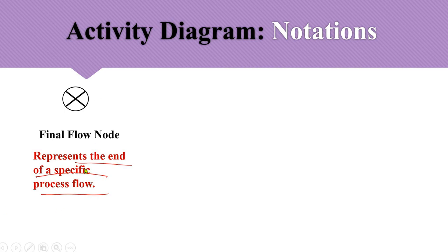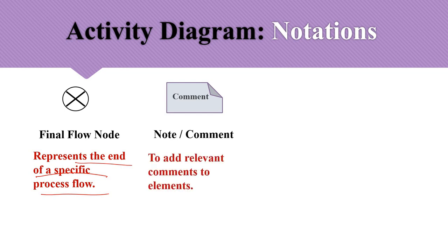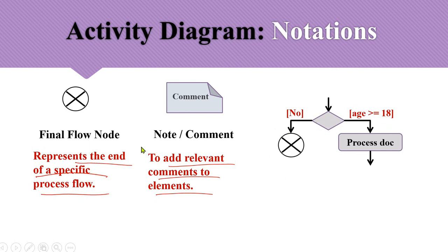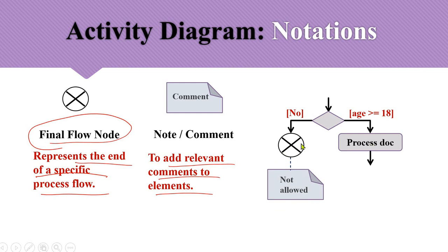The final flow node represents the end of a specific process flow, not the end of the entire activity diagram — just the end of a specific path. The note or comment notation is used to add relevant documentation to any entity in the activity diagram. For example, when applying for a license, if the age is not greater than 18 the flow ends with a final flow node, and comments can be added to any entity using a dashed line.